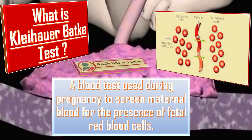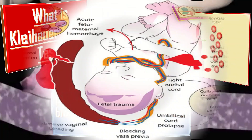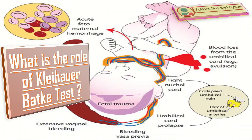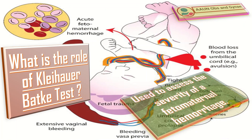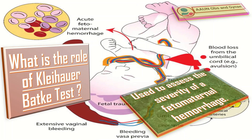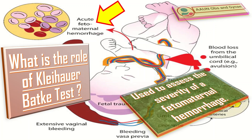The role of the Kleihauer-Betke test is that it is mainly used to assess the severity of fetomaternal hemorrhage, a condition in which a disruption in the placental barrier allows fetal blood to enter the maternal circulation.